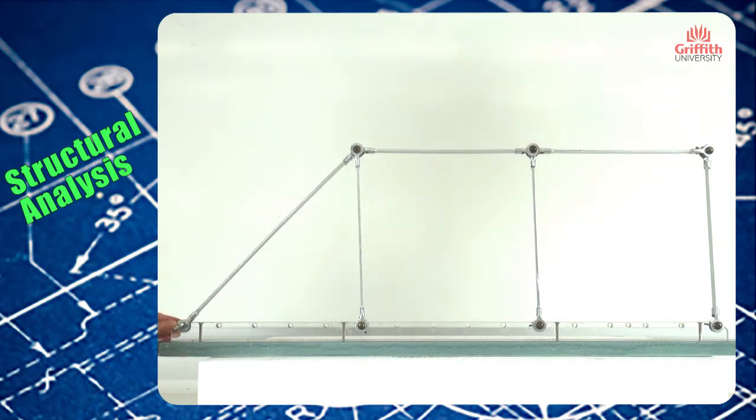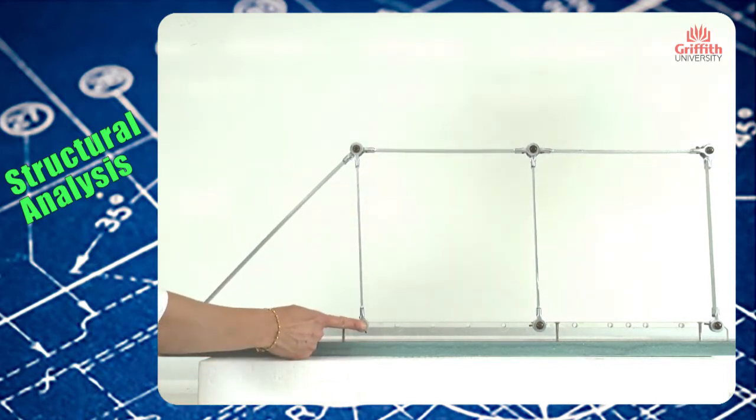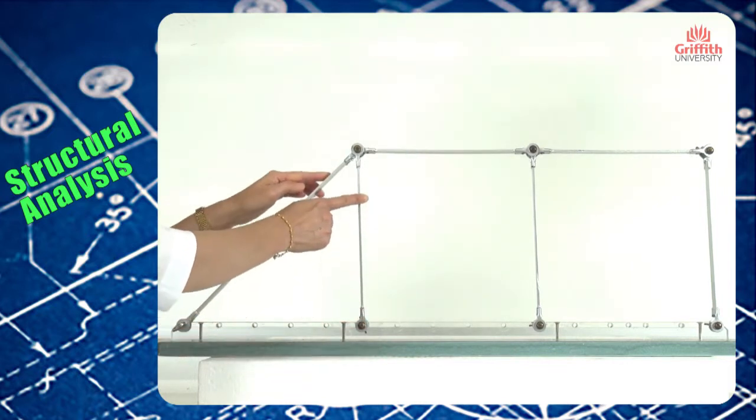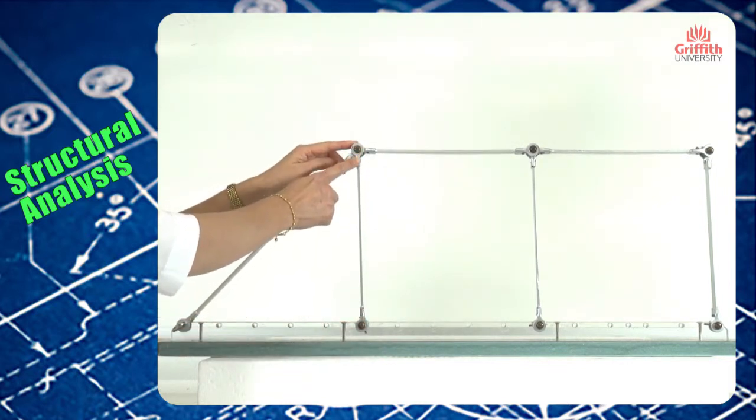Using the concept that two stable joints lead to a third stable joint, we have a situation where this stable joint and this stable joint, through two members, make the third joint stable.